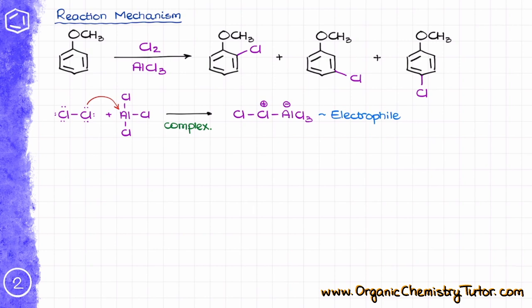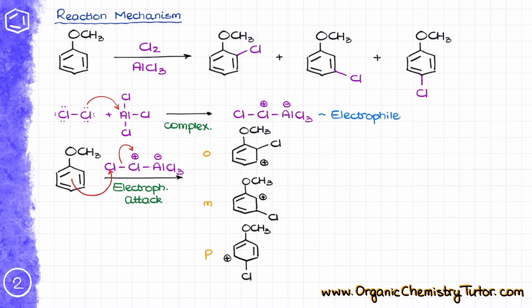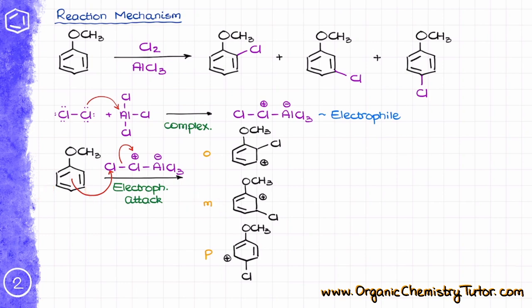The first step is electrophile formation — nothing new here. Next, our electrophile will react with anisole, and this is where the interesting part is. At this point, we can attack our molecule at three different positions. We can attack it at the ortho position, the meta position, or the para-position. This will give us three different carbocation intermediates, or sigma complexes as they are also called.